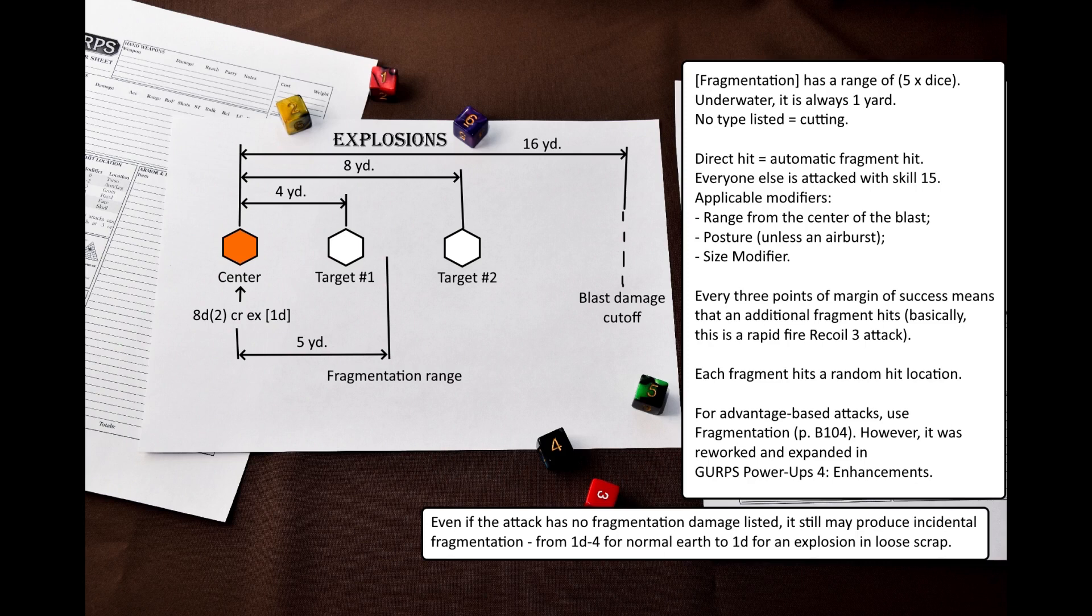A fragment hits automatically if the explosive attack actually strikes the target. The fragments attack everyone else in the area at skill 15, that is modified as follows. Range from the center of the blast, posture modifier, and the target's size modifier. If the explosion occurred in the air like an airburst warhead, then posture modifiers do not apply, and only overhead cover protects. For every three points by which the attack roll succeeds, one additional fragment strikes the target. Basically, fragmentation is a rapid fire attack with recoil 3. You can also use dive for cover as an active defense. This is the same roll that is used to dodge the initial explosion. Do not roll twice.